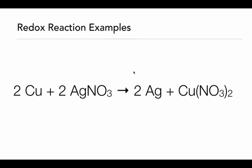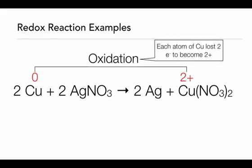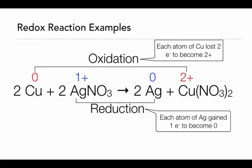Here's another example: copper reacting with silver nitrate to give silver and copper(II) nitrate. Copper starts with a zero oxidation state on the reactant side and ends with a two plus on the product side — this is oxidation, as each copper atom has lost two electrons. Silver starts with a one plus on the reactant side and ends with a zero oxidation state on the product side — this is reduction, as each silver ion has gained an electron and become neutral. Copper is giving up electrons; silver is accepting them during this redox reaction.